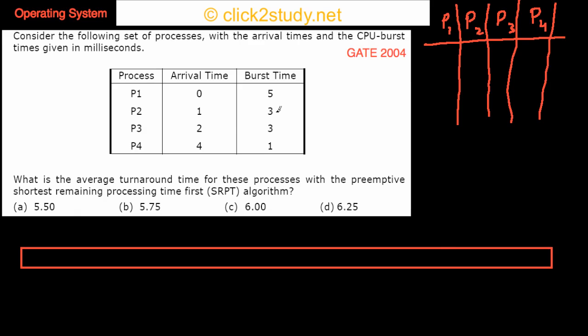All right, so we begin the next problem. Consider the following set of processes with the arrival times and the CPU burst times given in milliseconds. These are different processes P1, P2, P3, P4 and they arrive at these times: 0, 1, 2, 4, and the burst time, the amount of time in CPU they need is 5, 3, 3, and 1.